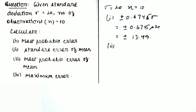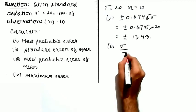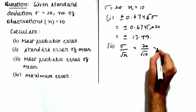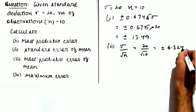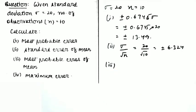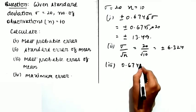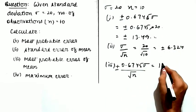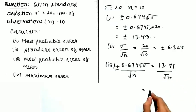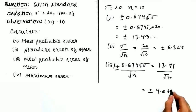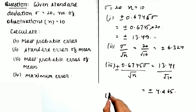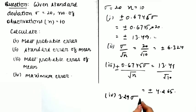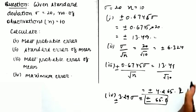The second part is the standard error of mean = σ / √n = 20 / √10 = ±6.324. The third part is the most probable error of mean = 13.49 / √10 = ±4.265. The fourth part is the maximum error of mean = 3.29 × σ = 3.29 × 20 = ±65.8. These are the required answers for this question.